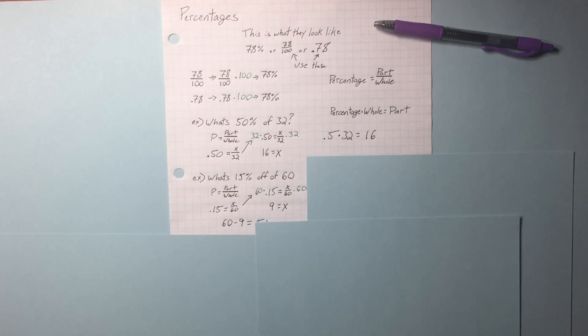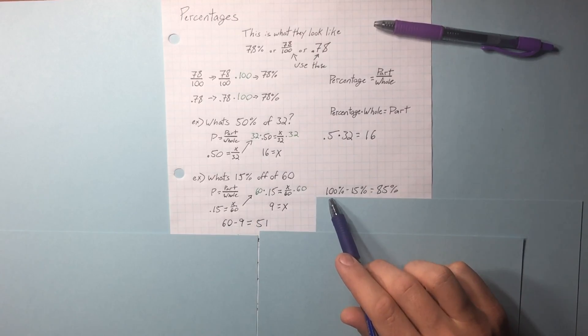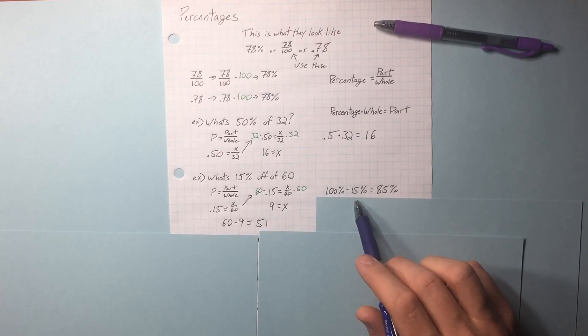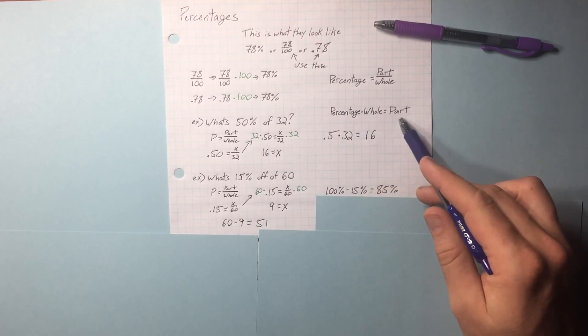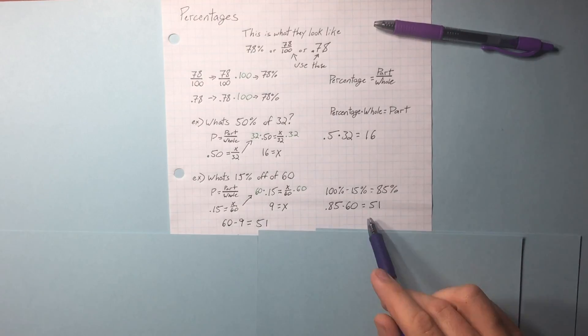So what is 15% off of 60? 51. You're not paying 100% of the price. You get 15% off, so you're actually only paying 85%. Percentage times the whole equals the part equals 51. Two steps instead of four. Either one of these methods work.